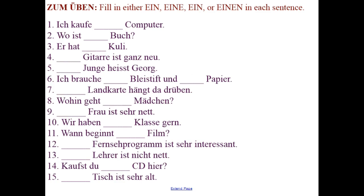Please write down these same 15 sentences from our previous unit and fill in the indefinite article in each sentence — so ein, eine, ein, or einen — depending on if the word is masculine, feminine, neuter, or masculine direct object. Again, use a dictionary site such as leo.org to find out any definite articles that you are unsure of.